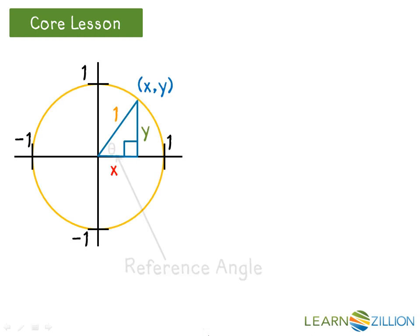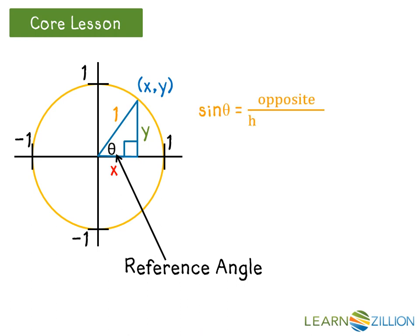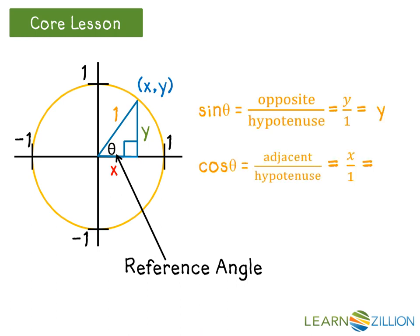If the reference angle theta is always inside the triangle at the origin, what are the sine and cosine values for this angle? Using the definition of sine of theta, which is opposite over hypotenuse, we get y over 1, which simplifies to just y. Using the definition of cosine of theta, which is adjacent over hypotenuse, we get x over 1, which simplifies to just x.